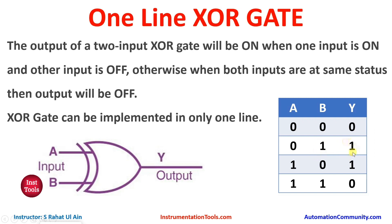For output Y to be true, only one input should be true and the other input should be false. XOR gate can be implemented in only one line in Schneider EcoStruxure Machine Expert Basic. We will move to EcoStruxure Machine Expert where we will draw a ladder diagram and implement XOR gate in only one line.